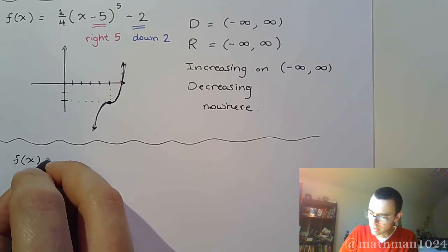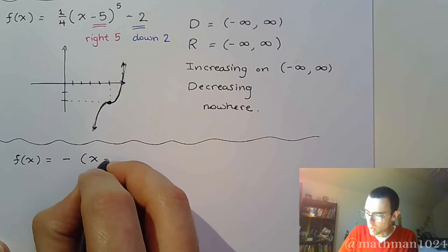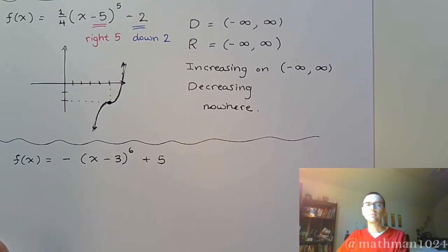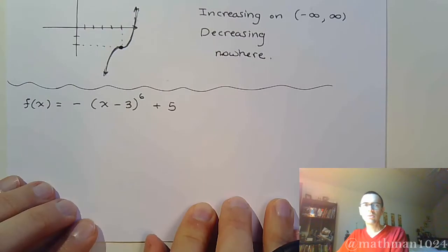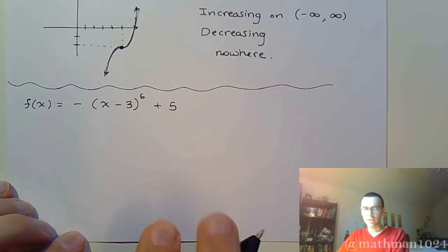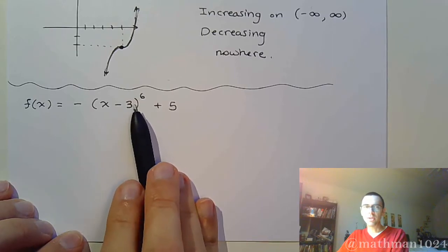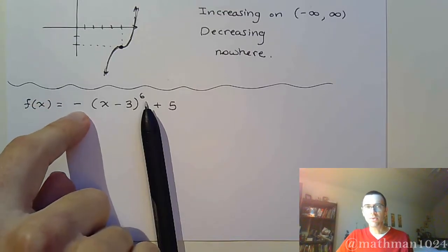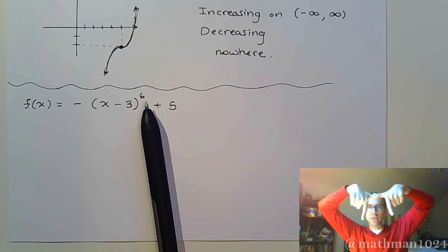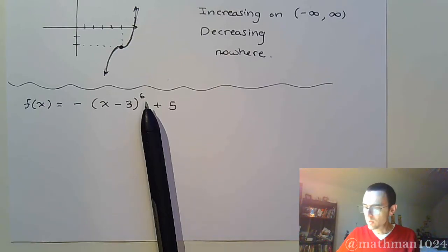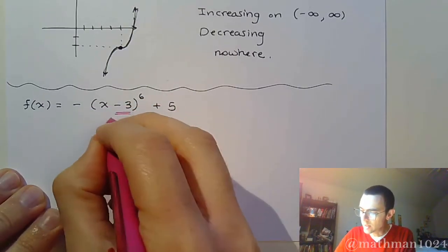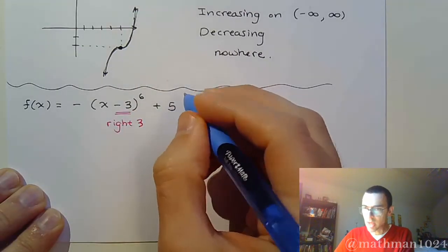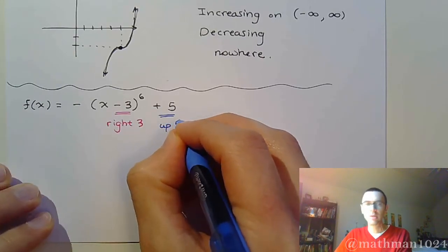Here's the last example: negative, quantity x minus 3 to the 6th power, plus 5. We're just going to get an idea about the location. You've got a power of 6, which means it's an even power, so it's going to be that U-looking shape. But since there's a negative in front, it's going to turn the graph upside down. Then we have the shifting to take care of: a minus 3 on the inside means I'm going to go to the right 3 units, and the plus 5 means I'm going to go up 5 units.